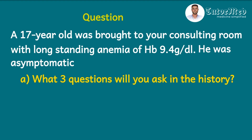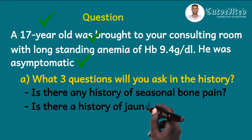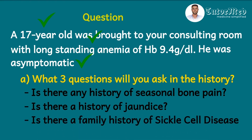For this clinical case, the relevant information includes the fact that he is a 17-year-old male, he came with a long-standing anemia with an Hb of 9.4 grams per deciliter, and he was asymptomatic. The three questions we will ask are: one, is there any history of seasonal or recurrent bone pain? Two, is there a history of jaundice? Three, is there a family history of sickle cell disease? However, there are many more questions we can ask, which we will explore in the subsequent slide.